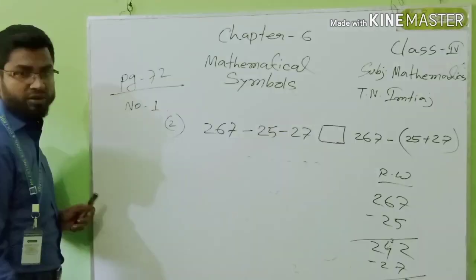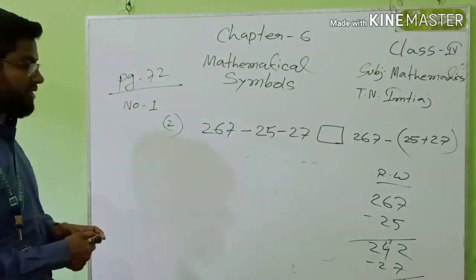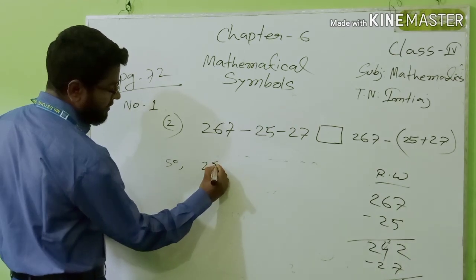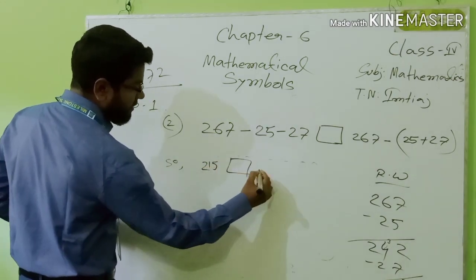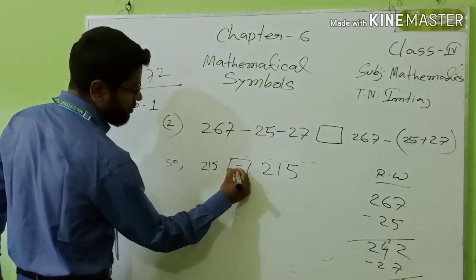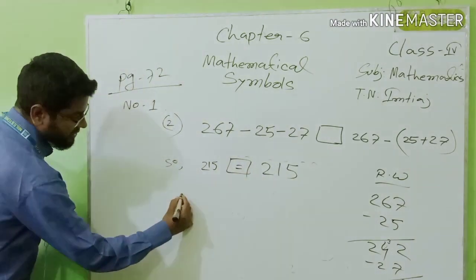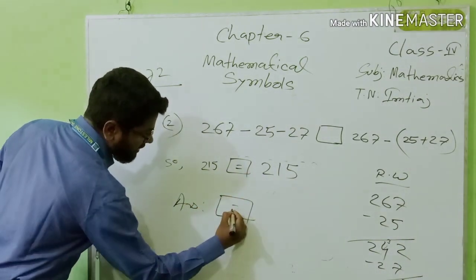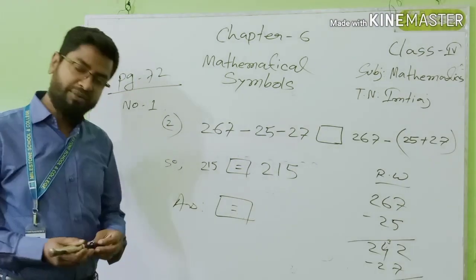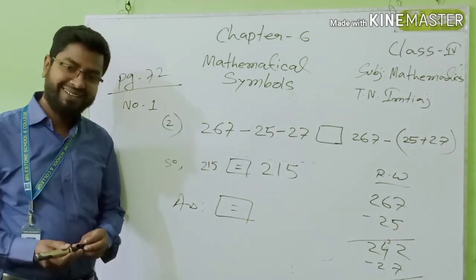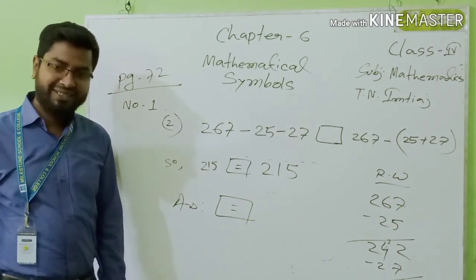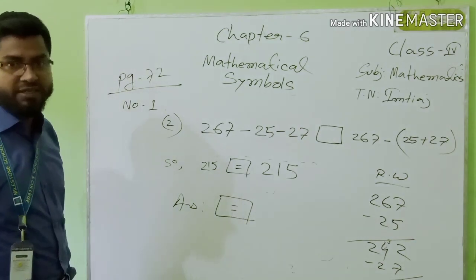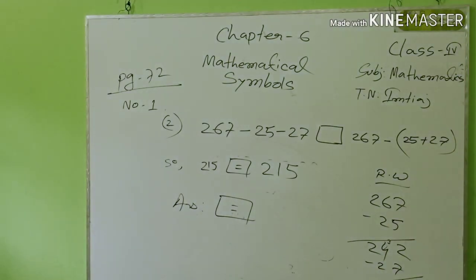So we can write: 215 equals 215. It will be the equal symbol. Answer will be: equal symbol. Yes, you are right — 100% right.